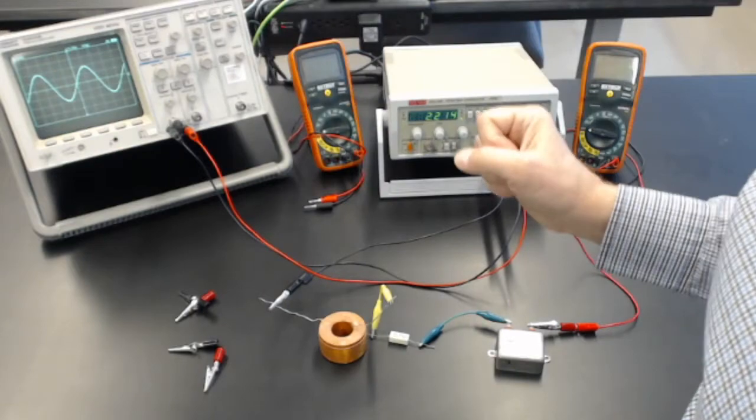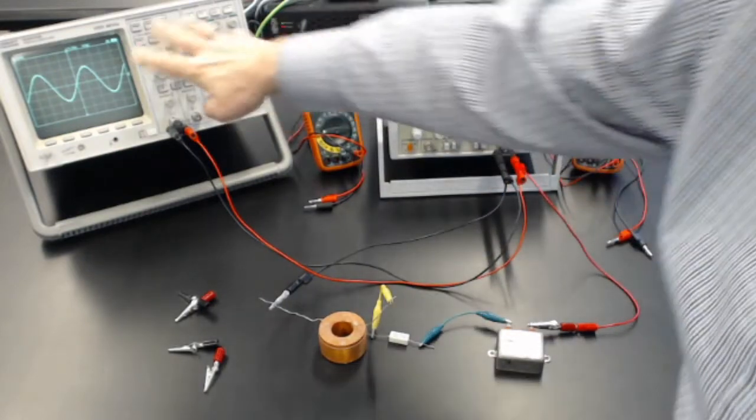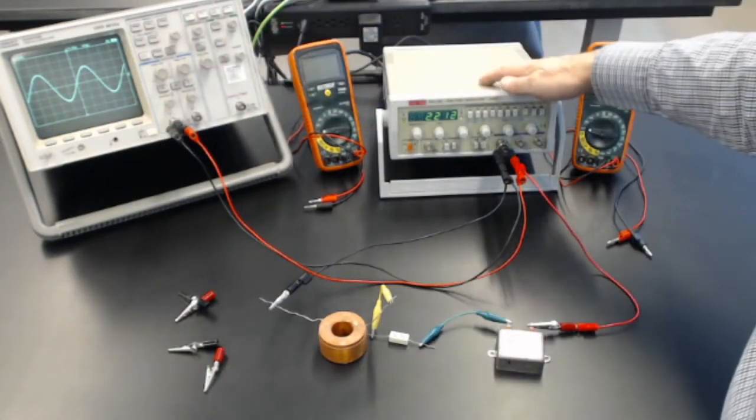It picks a nice scale for both the vertical and horizontal. So now this is monitoring what's coming out of the function generator.